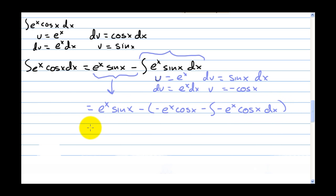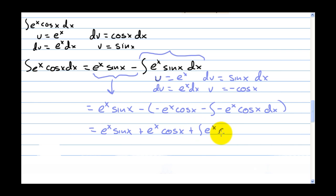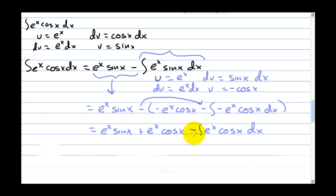Combining everything: e to the x sine of x plus e to the x cosine of x, and then — pulling the negative out — minus the integral of e to the x cosine of x dx. So the integral of e to the x cosine of x dx equals e to the x sine of x plus e to the x cosine of x minus the integral of e to the x cosine of x dx.